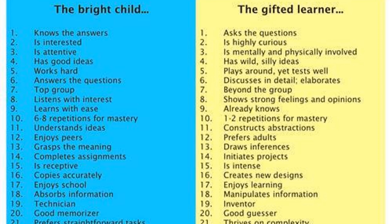Number twelve is enjoying peers versus preferring adults. Because a bright child or high achiever is compliant, they enjoy school in general — being with classmates, the structure of class. They're following the rules, doing what they're supposed to be doing, and because of this they tend to get along with their peers very well.